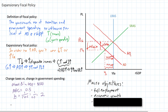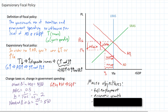We can quickly calculate the needed change in government spending to achieve the $100 increase in total GDP. The needed change in G equals the needed change in GDP divided by the multiplier: 100 divided by 2 equals $50. So an increase in government spending of $50 would lead to an increase in GDP of $100.